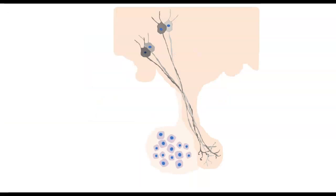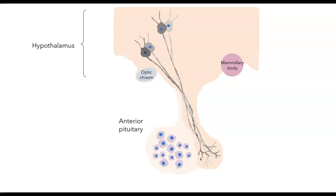Here I've drawn a cartoon of the system. Up here we have the hypothalamus, and there are a couple landmarks. This is the optic chiasm, and this bump back here corresponds to the mammillary body. The optic chiasm lies at the front edge of the hypothalamus. The mammillary body lies towards the rear, and that allows us to have an anterior-posterior landmark. This would be the anterior pituitary, and here's the posterior pituitary. Remember that the posterior pituitary contains the nerve terminals of neurosecretory cells whose cell bodies lie in the hypothalamus, and we can see that here.